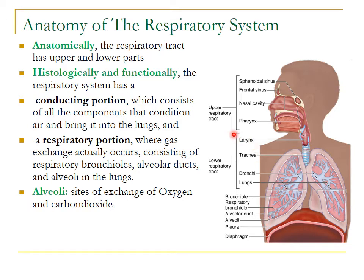Histologically and functionally, the respiratory tract has a conducting portion and a respiratory portion. The conducting portion consists of all the components that condition the air and bring it to the lungs, whereas the respiratory portion is the gas exchange portion and consists of the respiratory bronchioles, the alveolar ducts, and the alveoli — which are the sites of exchange of oxygen and carbon dioxide.